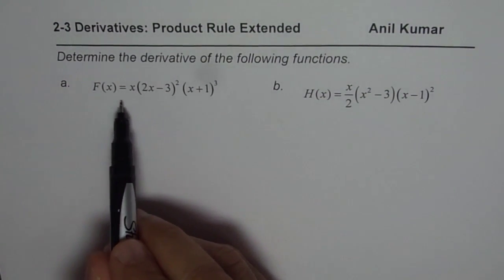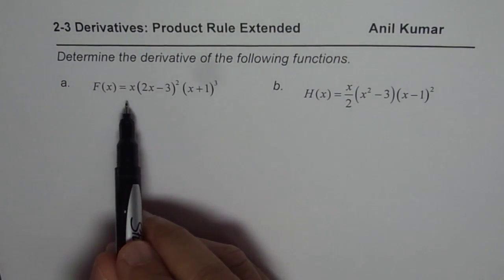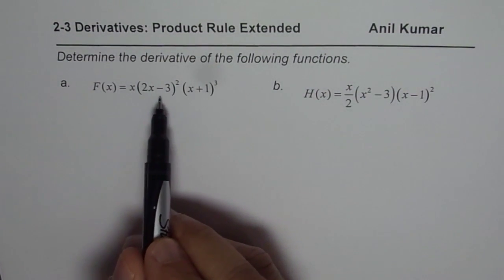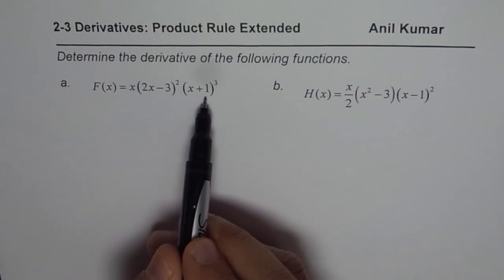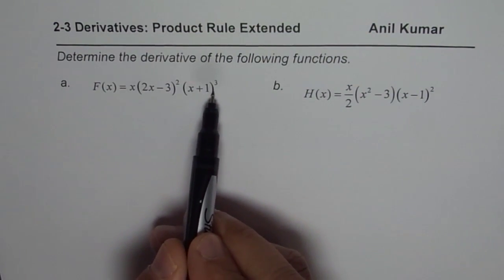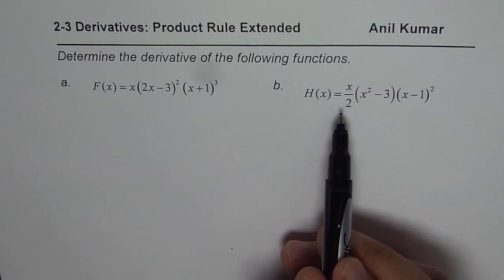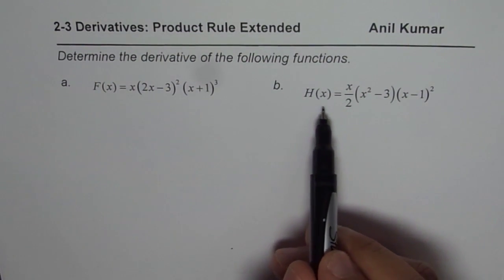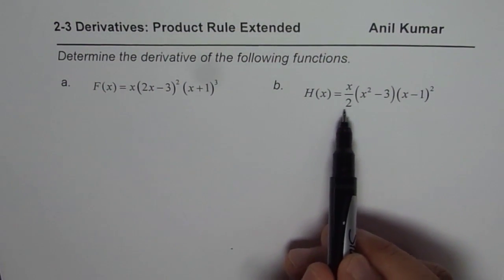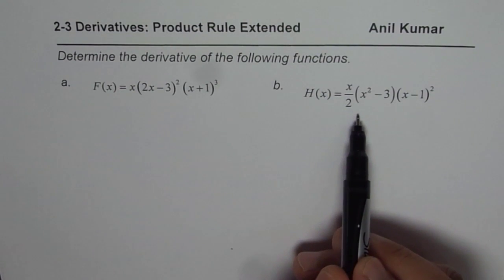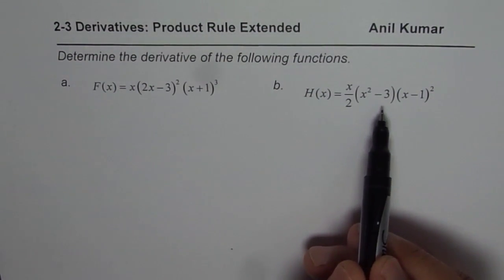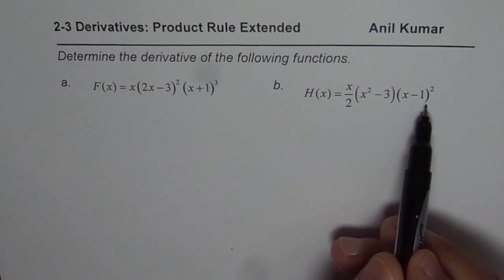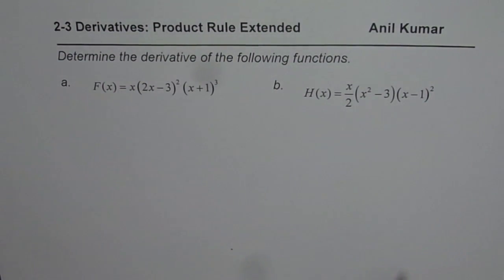The first function is f of x equals x times (2x minus 3) squared times (x plus 1) cubed. The second function is h of x equals half of x times (x squared minus 3) times (x minus 1) squared.